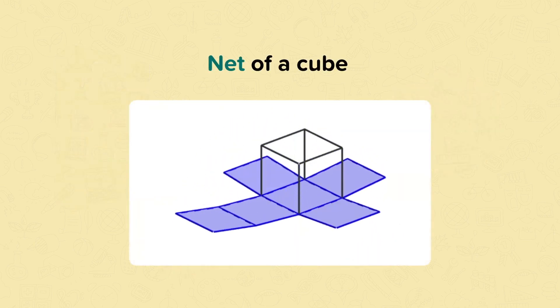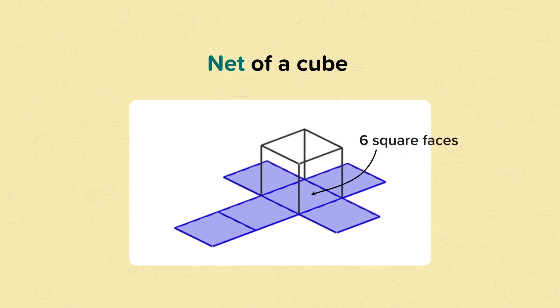This is the net of a cube. The net shows that a cube has six square faces.